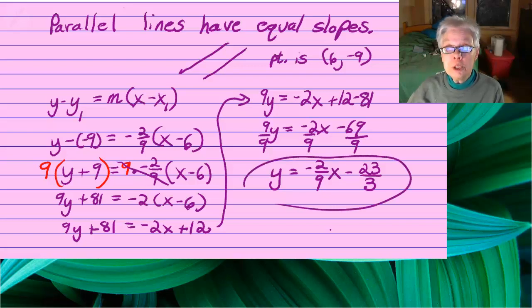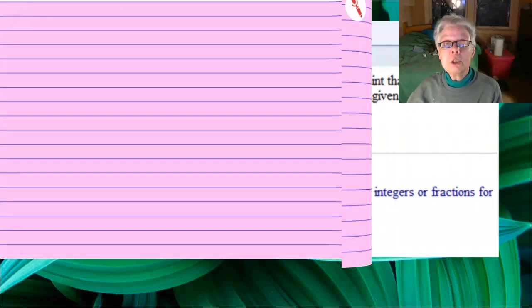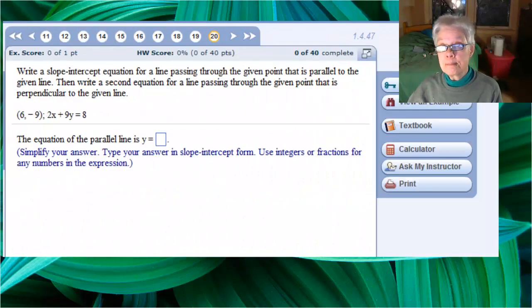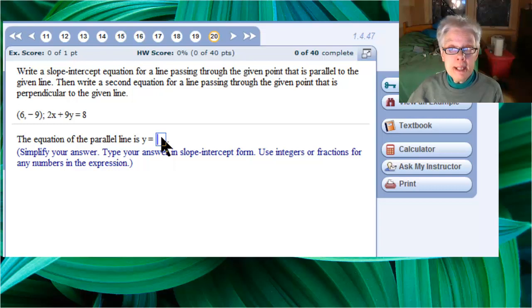So that y equals negative 2 over 9 x minus 23 thirds. That's the equation of the line parallel to the given line, going through the given point. Let's put that in the answer box.